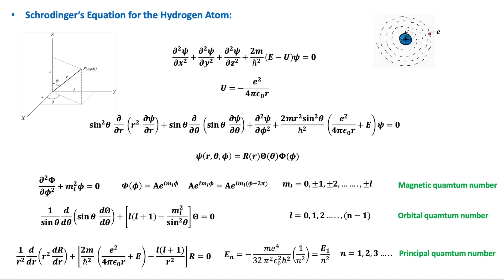When Schrödinger applied his wave equation to the hydrogen atom, he found that quantization appears naturally due to the requirement that a certain spatial function is finite and single-valued.